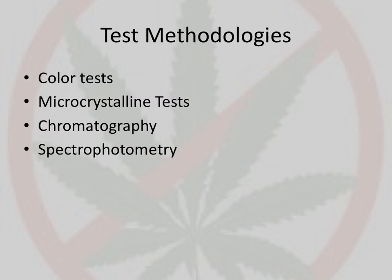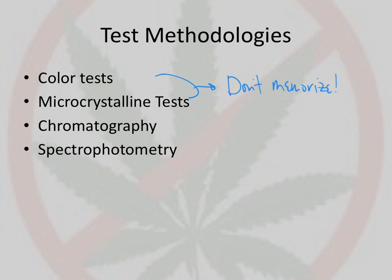The four types of test methodologies that we'll be discussing are color tests and microcrystalline tests, which typically tend to be more on the idea of a screening test, and chromatography and spectrophotometry. For color tests and microcrystalline tests, it's important for you to learn just the basics, but please don't memorize the specific chemicals used, because this is something that if you work in a laboratory, you get used to doing. For chromatography and spectrophotometry, I would like you to know more details about them, and we'll go into those in greater detail.